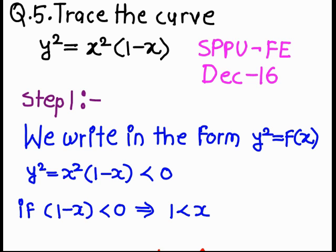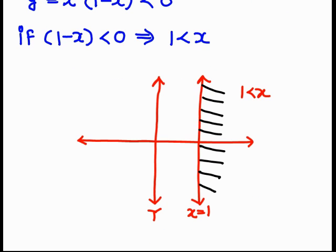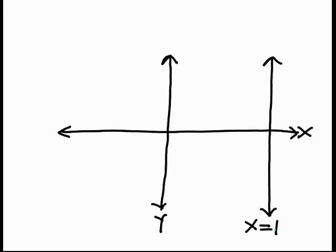In step number 1, we find the region of absence. So here if you observe, for all x those are greater than 1, the given curve is absent. So this is how we find the region of absence. From step number 1, we get the region of absence.